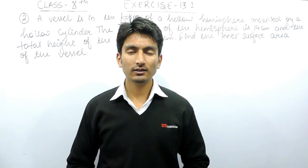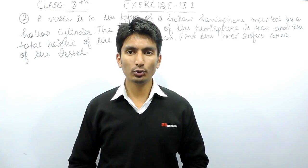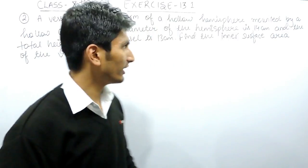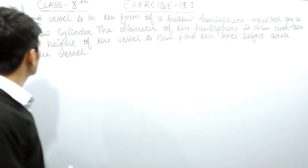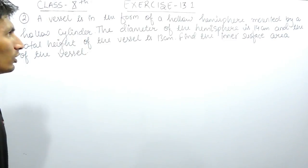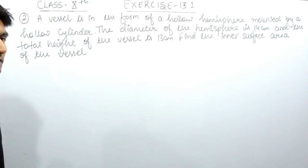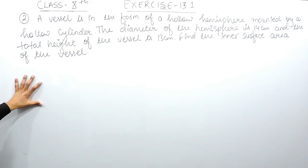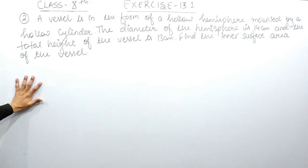Hello everyone, we are from True Math and in this video we are going to solve question number 2 of Exercise 13.1. The question says: a vessel is in the form of a hollow hemisphere mounted by a hollow cylinder.